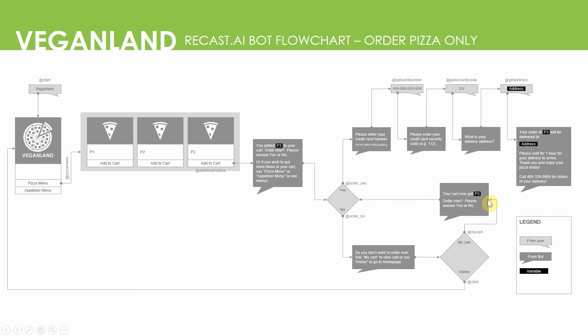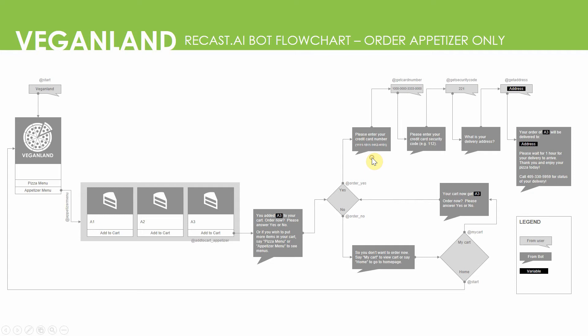Once you say 'my cart,' you will see what you added to your cart. This whole thing can be circular unless you say yes, at which point you go through the whole process of finalizing your order — first entering your credit card number, your security code, and your address. The bot then gives you a confirmation message telling you what you have ordered and the address it will be delivered to, and tells you to wait one hour for your delivery to arrive.